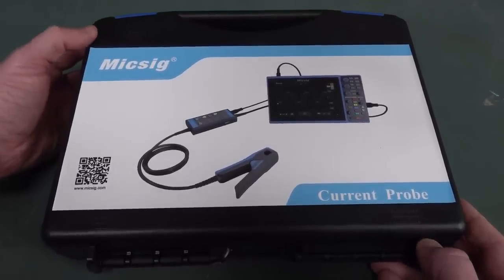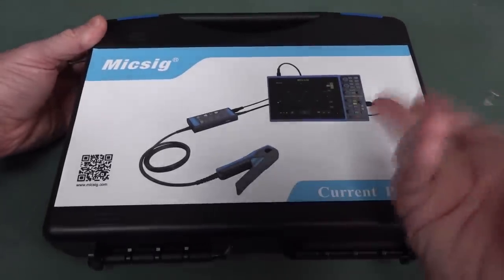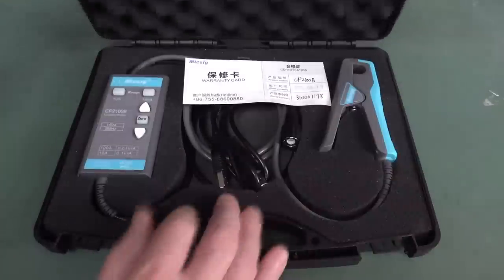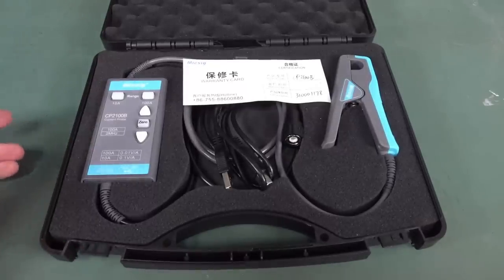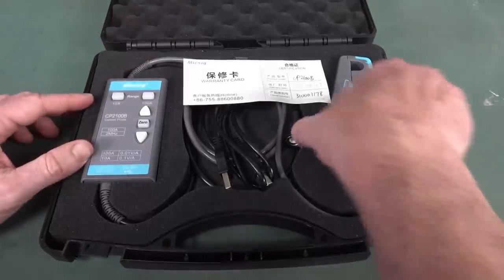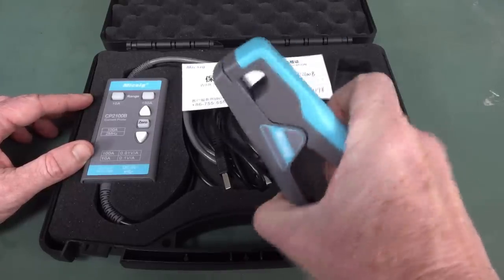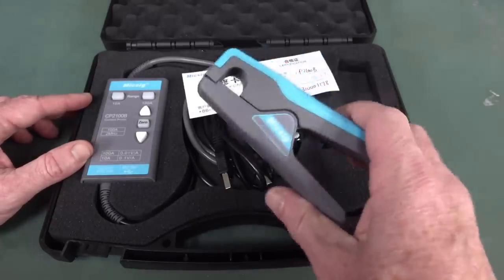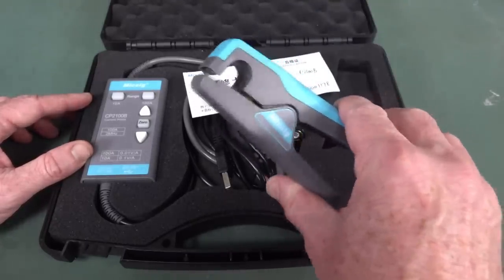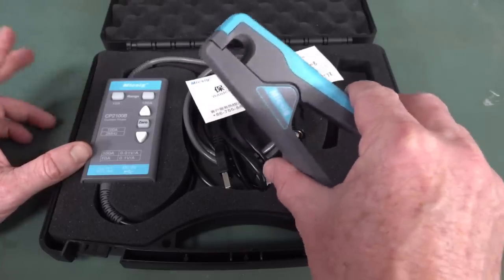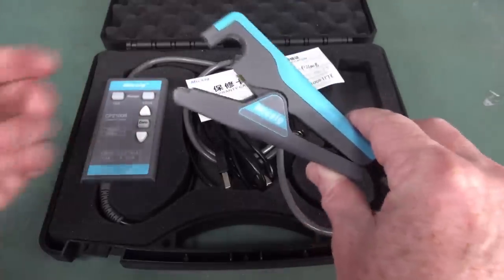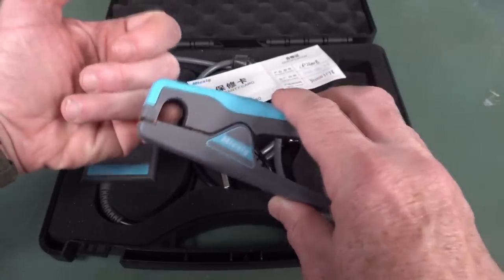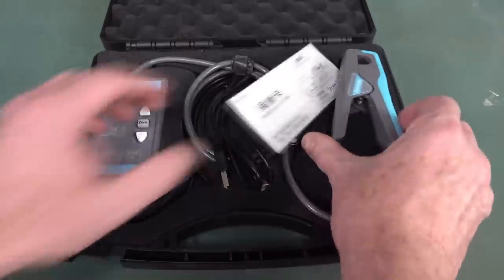This is the CP2100B current probe that hooks into your oscilloscope. Here it is hooking into a portable oscilloscope. The great thing about these is that you don't have to break into your circuit with a current shunt or something like that. You can actually just put it over a wire and clamp like that. Obviously, you can't do that to a PCB trace if you want that capability.